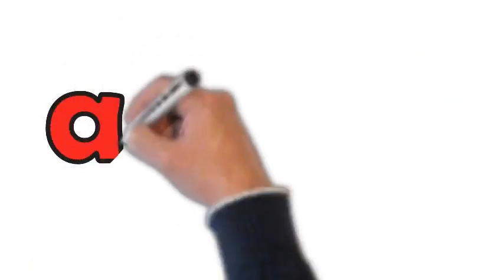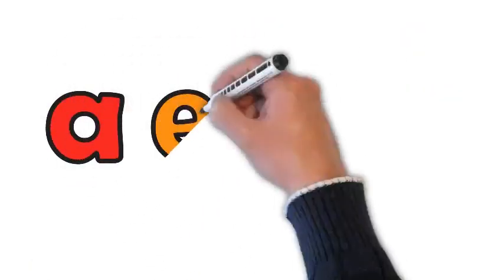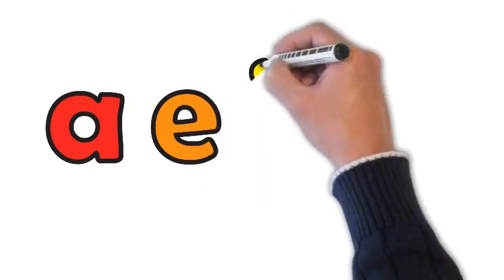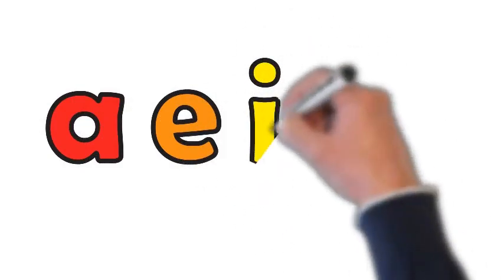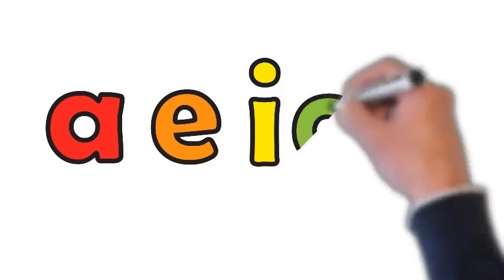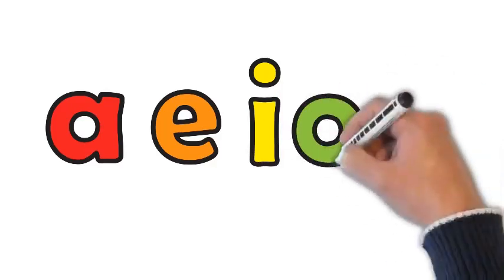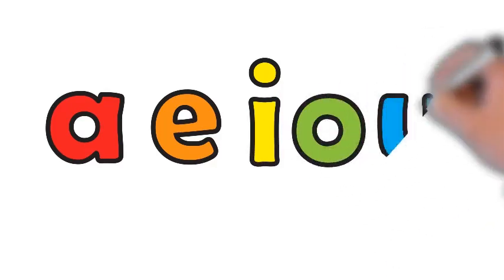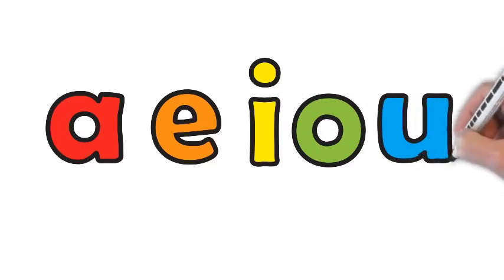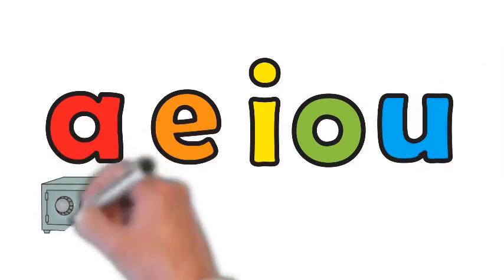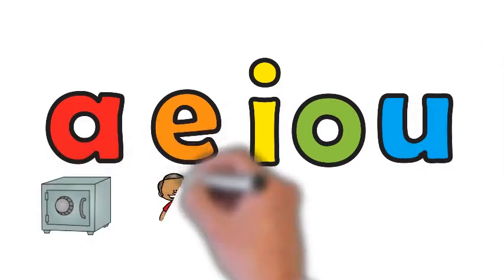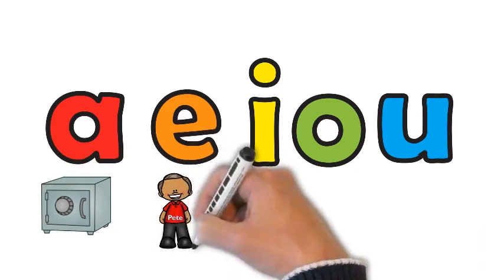Now let's review the long vowel sounds. The long vowels say the letter names. So let's review the keywords for those and the sounds. The keyword for A is safe. The keyword for E is peat.